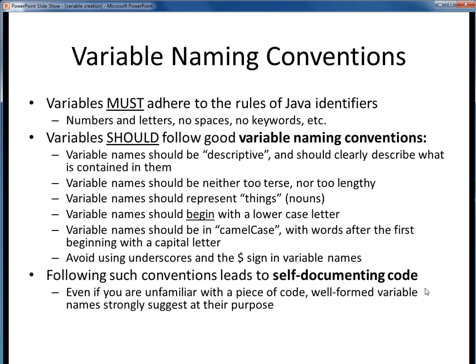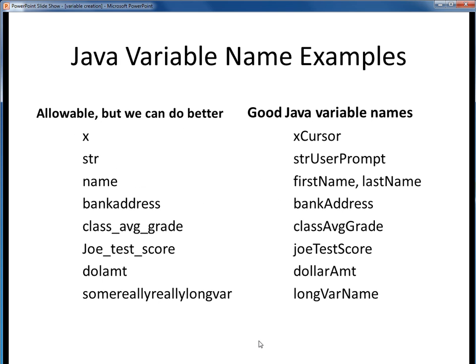The goal in all of this is simple. We ideally want all our Java code to read like a book and be self-documenting. Someone who may not be familiar with your code should still be able to look it over and get a quick sense of what it's doing, simply from the specific variable names you're using. Here are examples of some variable names in Java. All of these names represent legitimate identifier names by the minimum requirements of Java. But the names on the left, although they are allowable, for various reasons wouldn't be the best names to use. The ones on the right, however, are improved versions.